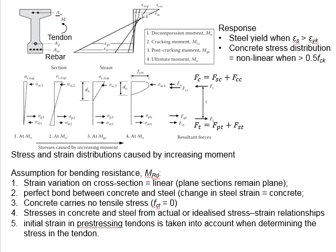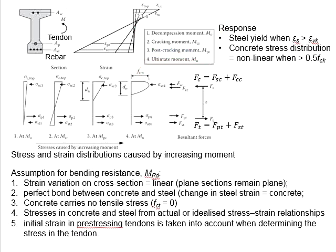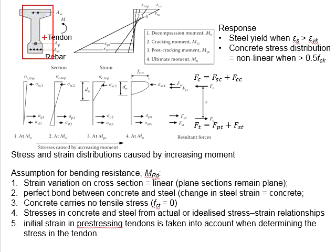The incremental moment can be classified into four different stages: the decompression moment, cracking moment, post-cracking moment, and ultimate moment. The ultimate moment is the largest moment that can be taken by the section, while the decompression moment refers to the moment at which the entire section is still undergoing compression. The magnitude of moment at this stage is the smallest.